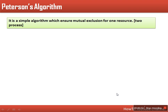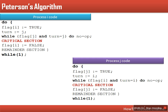In this video we will see Peterson's algorithm for solving the critical section problem. In Peterson's algorithm, it is suggested that every process will use two variables. One variable will be used to specify their intention to enter their critical section, known as flag, and another variable which will decide which process will enter its critical section.